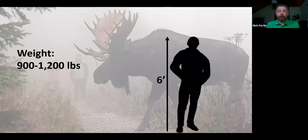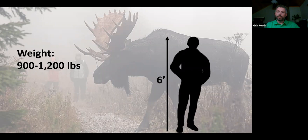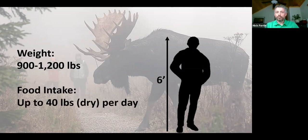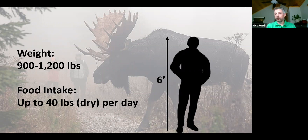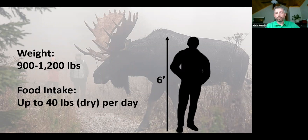An adult moose in our part of the world typically weighs somewhere between 900 and 1,200 pounds live weight. A large bull might reach 1,500 pounds, and in Alaska and the Yukon, where the subspecies is a little larger, the biggest bulls might push 2,000 pounds. For an animal that size they need a lot of food — moose can consume up to 40 pounds dry weight of food per day, or up to 100 pounds of green forage every single day during the summer.